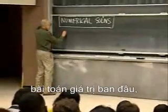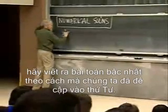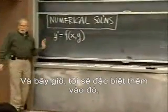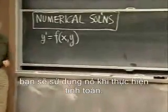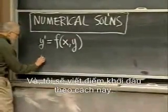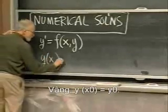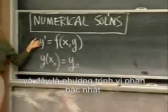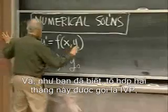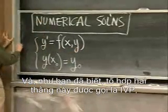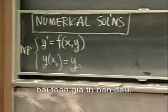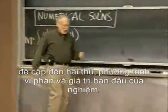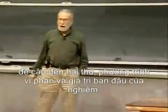The problem is an initial value problem. Let's write it as a first-order problem the way we talked about it on Wednesday. I'll specifically add the starting point that you used when you did the computer experiments. The starting point is: y of x₀ equals y₀. This is the initial condition, and this is the first-order differential equation. Together they are called an IVP — an initial value problem — meaning the differential equation and the initial value that you want to start the solution at.